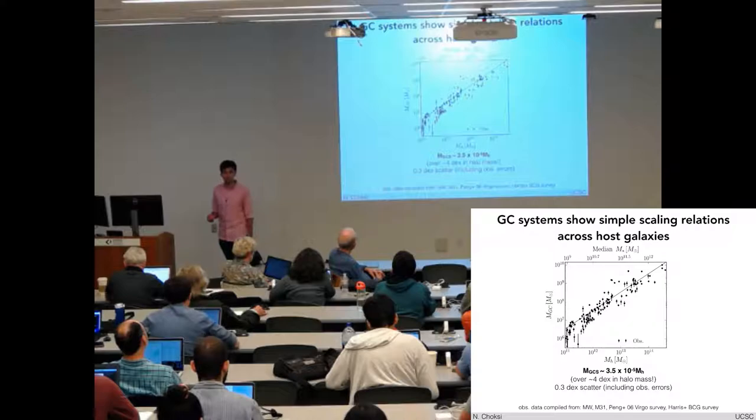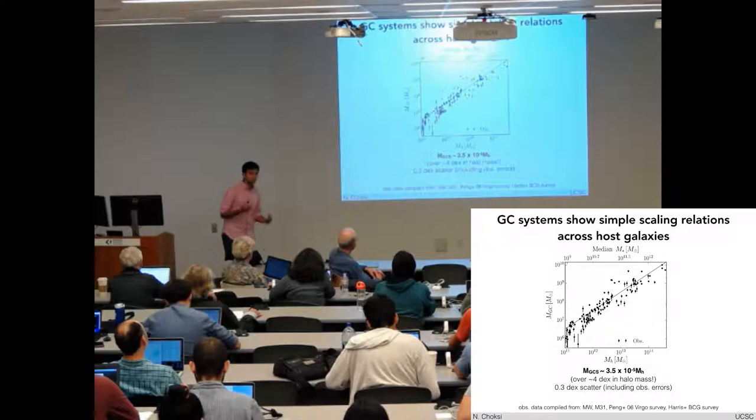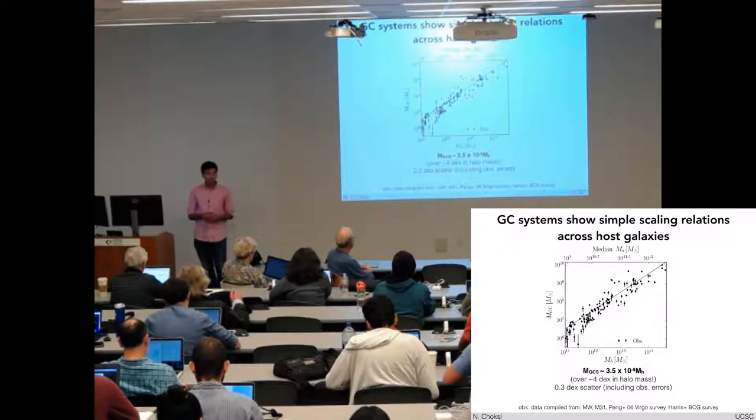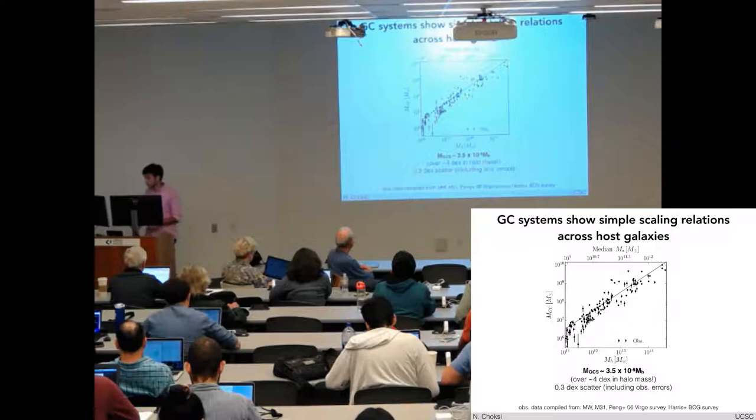In the last 20 or so years, we've studied globular clusters in the local universe in a lot of detail, and we're now getting to the point where we can study not only individual clusters, but ensembles of clusters, globular cluster systems. There's this now famous relation between the combined mass in globular clusters and the host halo mass, spans about four dex in halo mass, but there are also other interesting trends.